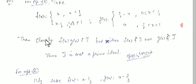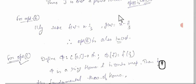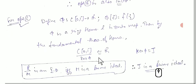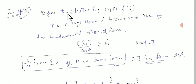Similarly, g is not a prime ideal. Option B is also incorrect.